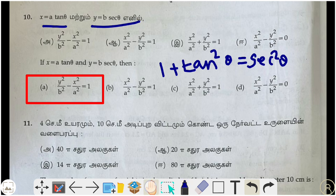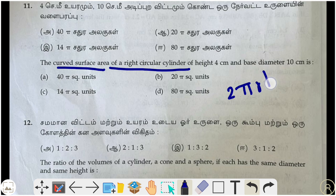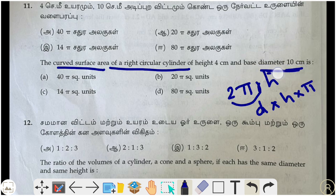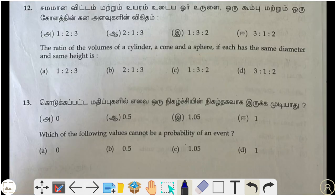Eleventh question: the curved surface area of a right circular cylinder is 2πrh, which can also be written as π × d × h. Here d = 10 and h = 4, so CSA = π × 10 × 4 = 40π square units.